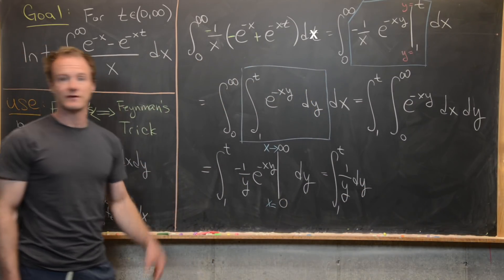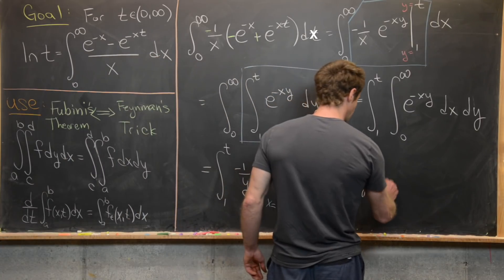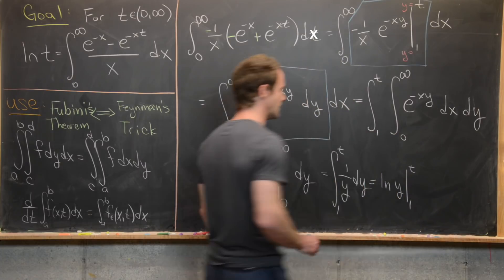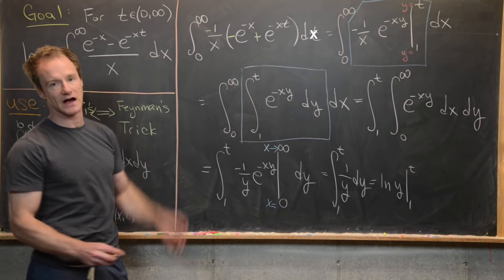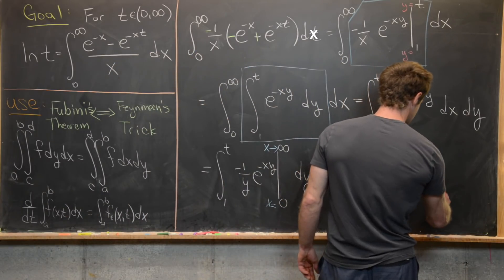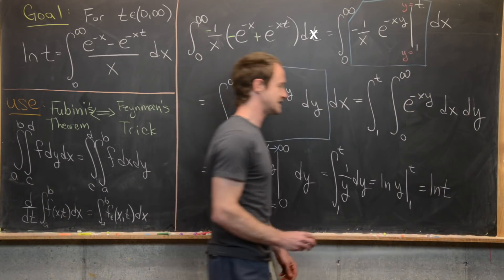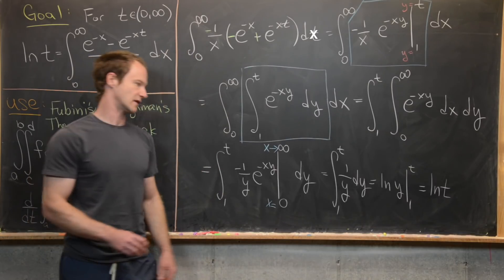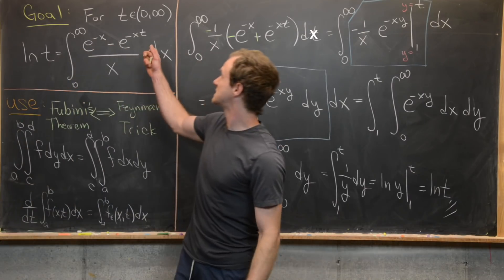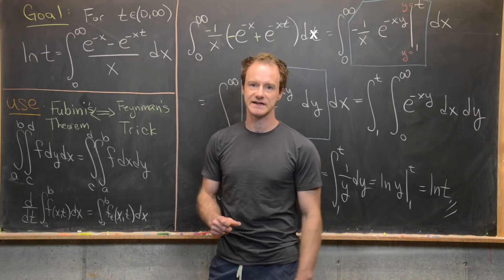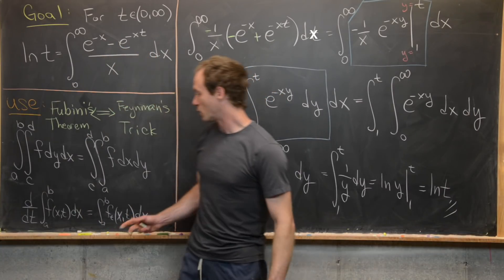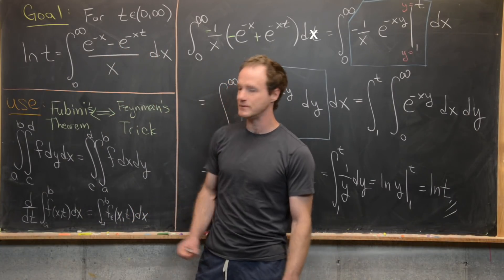That is the derivative of the natural log. In other words, we get the natural log of y evaluated from one to t — we don't need an absolute value sign here because t is positive. That gives us the natural log of t minus the natural log of one, but the natural log of one is zero. So that establishes this formula using Fubini's theorem. Now I'll erase this and build the formula one more time using Feynman's trick.